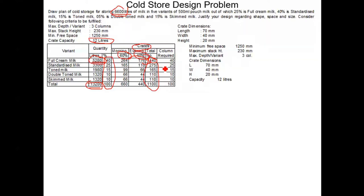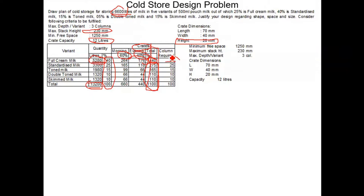For the number of columns required: the height of one crate is 20 mm and the maximum stack height is 230 mm. So 230 divided by 20 gives approximately 11, meaning 11 crates can be stacked on top of each other to form one column. Therefore 440 crates will be arranged in 40 columns.